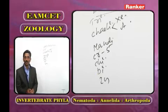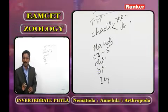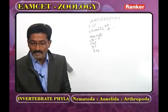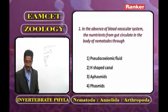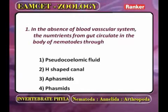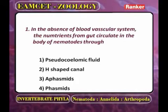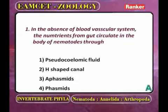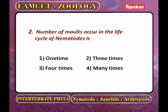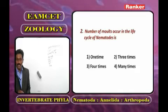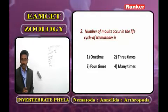Now we discuss important MCQ bits. In the absence of a blood vascular system, nutrients from the gut circulate in nematodes through the pseudocoelomic fluid. Second: the number of moults in the life cycle of nematodes — in all nematodes, larvae undergo four moults before reaching the adult stage.